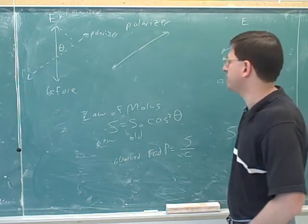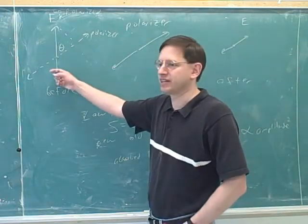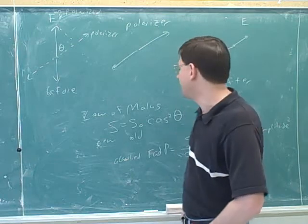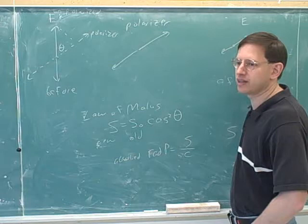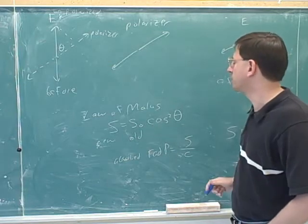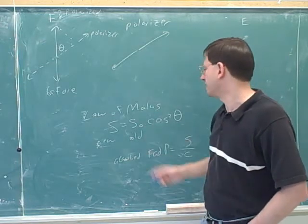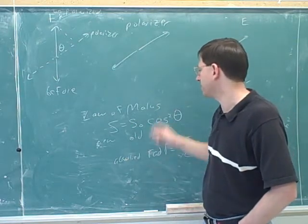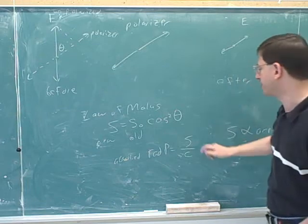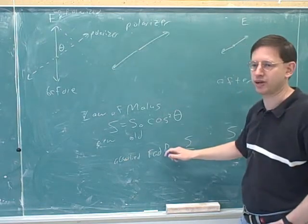So a good example question would be, they could tell you the intensity of this light and they could tell you theta. And then they could ask you for how much radiation pressure you can get from the light after it goes to the polarizer. Well, first of all you would figure out, I'm sorry, they would tell you the intensity of the old light. Then you would use Malus's law to find the intensity of this light, and then you would plug that into this equation to find the radiation pressure.